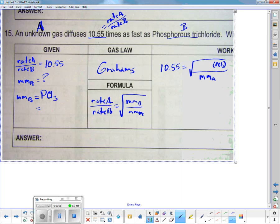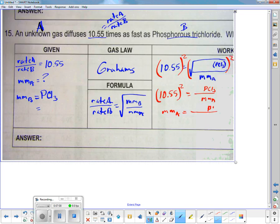My gas law again is Graham's. Rate A divided by rate B equals square root of molecular mass B over molecular mass A. So I get 10.55 equals the square root of PCl3 on top divided by molecular mass A. Now since this is underneath, this one you do need to square both sides to get rid of the square root. When you do that you get 10.55 squared equals the mass of PCl3 divided by molecular mass A.